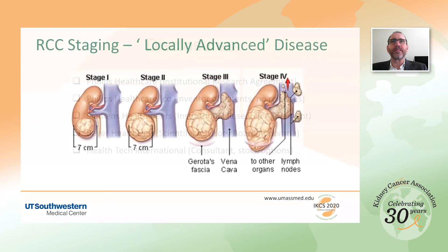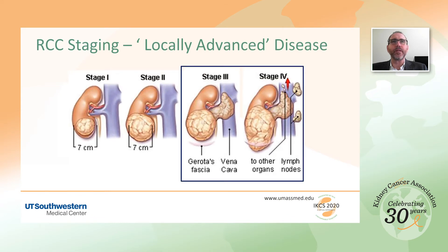Locally advanced kidney cancer refers to the regional extension of tumor beyond the renal capsule. This occurs in three ways: first, direct extension into the fat that surrounds the kidney; second, through the renal vein and into the inferior vena cava; and third, through the regional lymph nodes. In this talk, I will be discussing the last two mechanisms, so let's start reviewing the lymphatic spread.